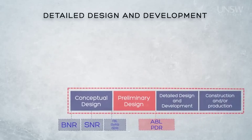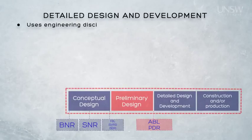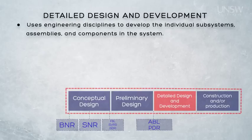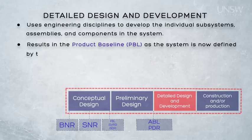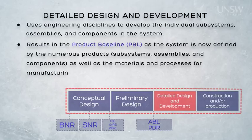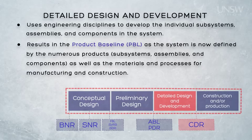The allocated baseline developed in preliminary design is the start point for detailed design and development, where traditional engineering is undertaken to provide a complete development of the individual sub-systems, assemblies, and components that make up the system. At this level, we do engineering prototypes and confirm the system design by test and evaluation. The result is the establishment of the product baseline — the subsystems, assemblies, and components needed to build the total system — along with the materials, processes, and people required for manufacturing and construction. The definition of the system at this stage should be sufficiently detailed to support commencement of construction and production. The review at the end of this activity is called the critical design review.